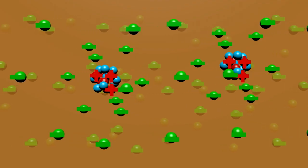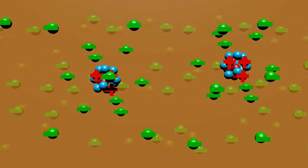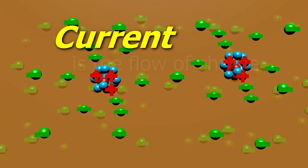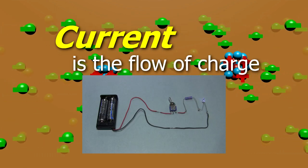So we have negatively charged electrons moving down the wire, and positively charged protons just sitting there. Finally, we can say what current is. Current is the flow of charge. In this case, the flow of charge along a wire.